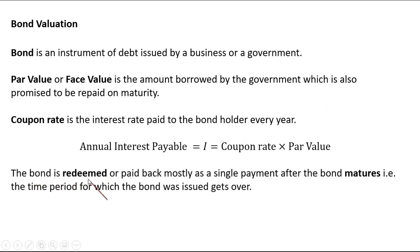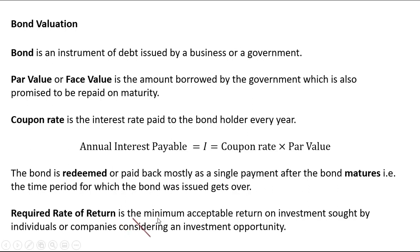The bond is said to be redeemed or paid back mostly as a single payment after the bond matures, meaning the time period for which the bond was issued gets over. The required rate of return is the minimum acceptable return on investment sought by individuals or companies considering an investment opportunity — meaning if I'm not going to buy this bond and I'm interested in some other investment, what is the minimum acceptable return I'm seeking? This depends upon the market factors.